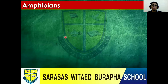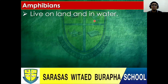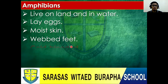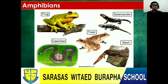Amphibians. What are the characteristics of amphibians? They live on land and in water. They lay eggs. They have moist skin. They have webbed feet. And they are cold-blooded as well. Let's see some examples: a frog, toad, salamander, caecilian, and a newt.